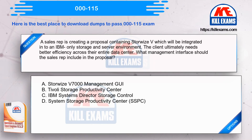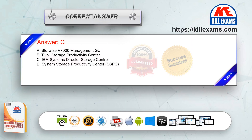A sales rep is creating a proposal containing StorWise V7000, which will be integrated into an IBM-only storage and server environment. The client ultimately needs better efficiency across their entire data center. What management interface should the sales rep include in the proposal? Option A: StorWise V7000 Management GUI. Option B: Tivoli Storage Productivity Center. Option C: IBM Systems Director Storage Control. Option D: System Storage Productivity Center (SSPC). The correct answer is Option C.